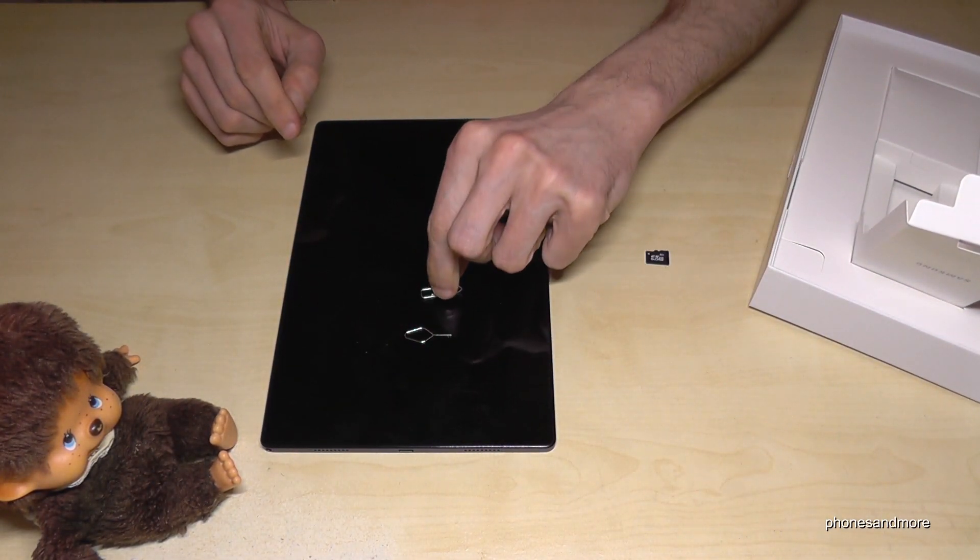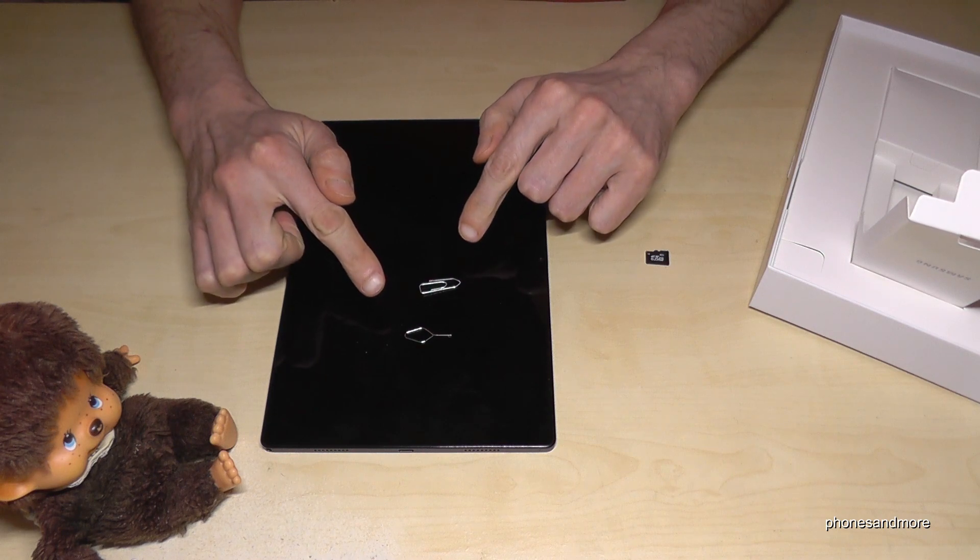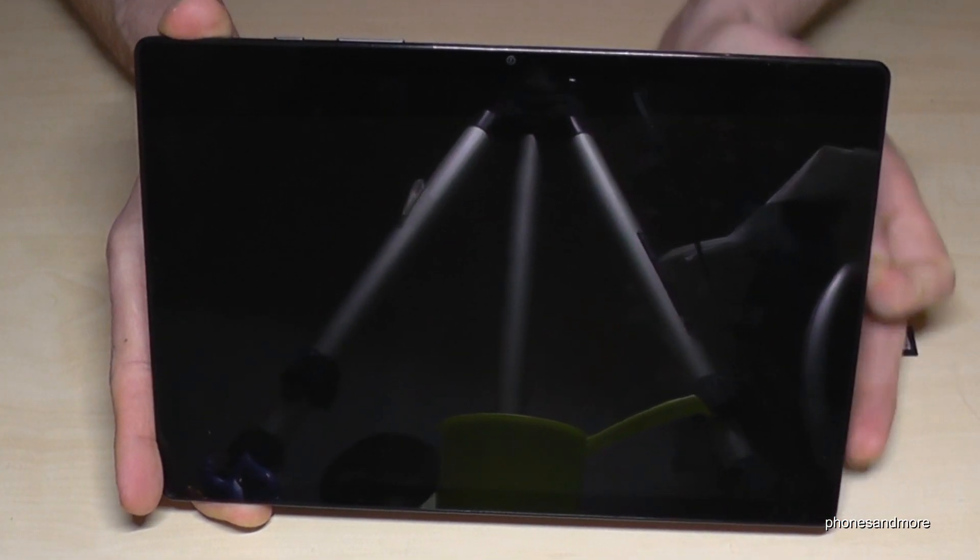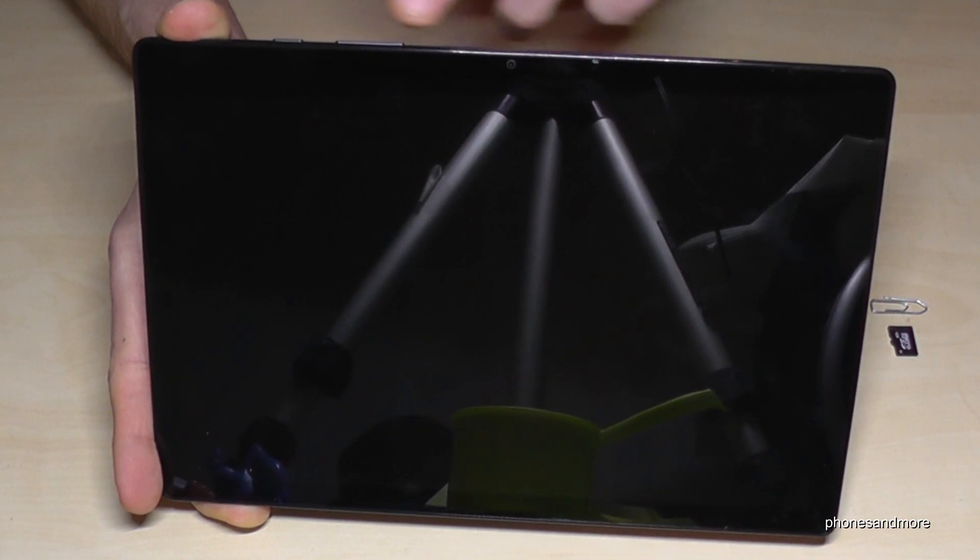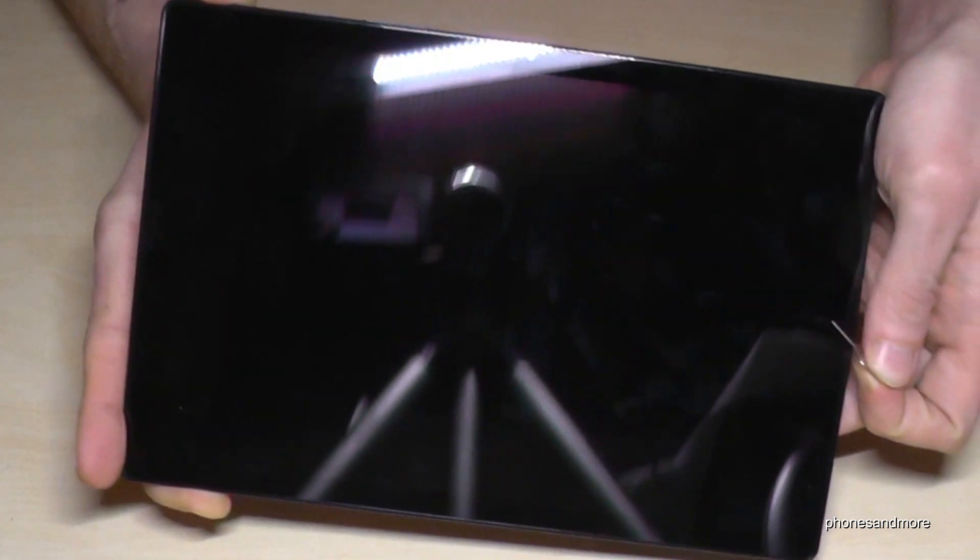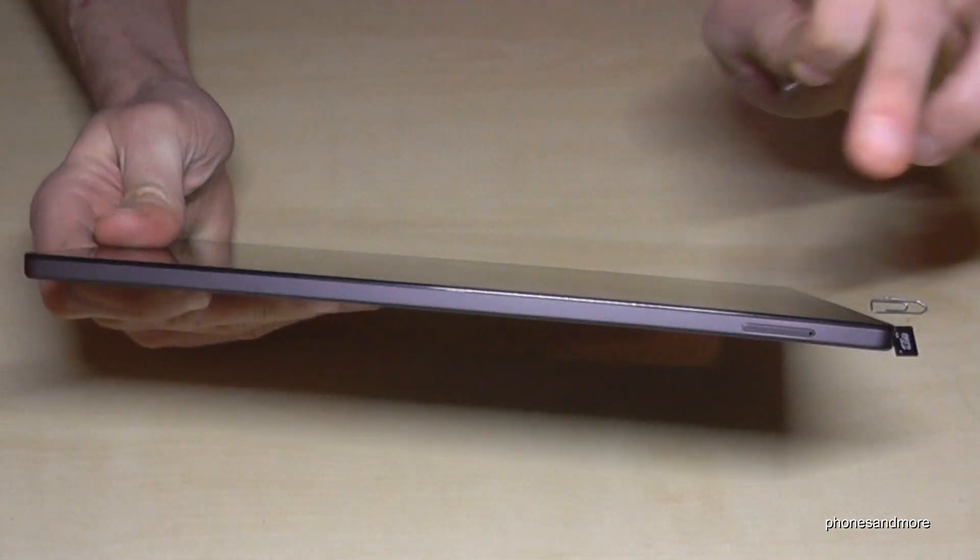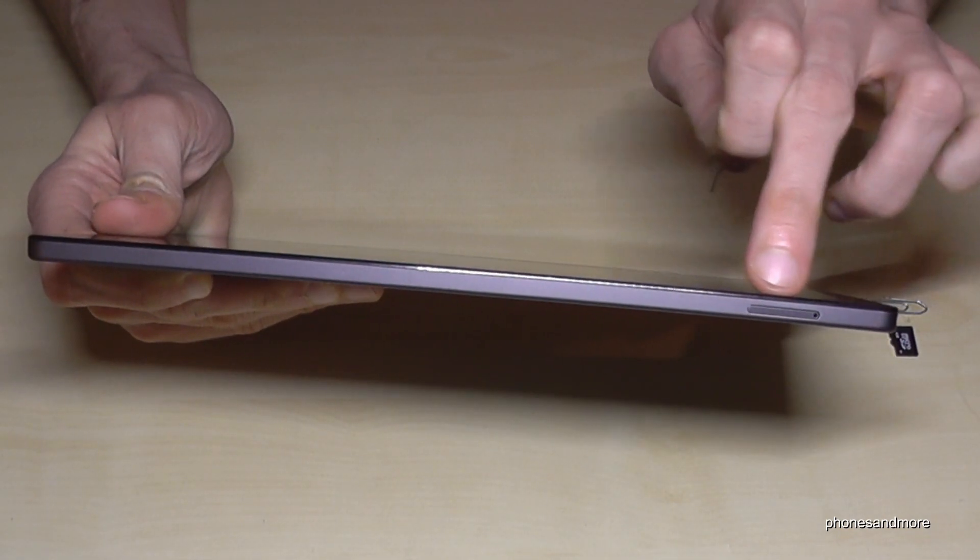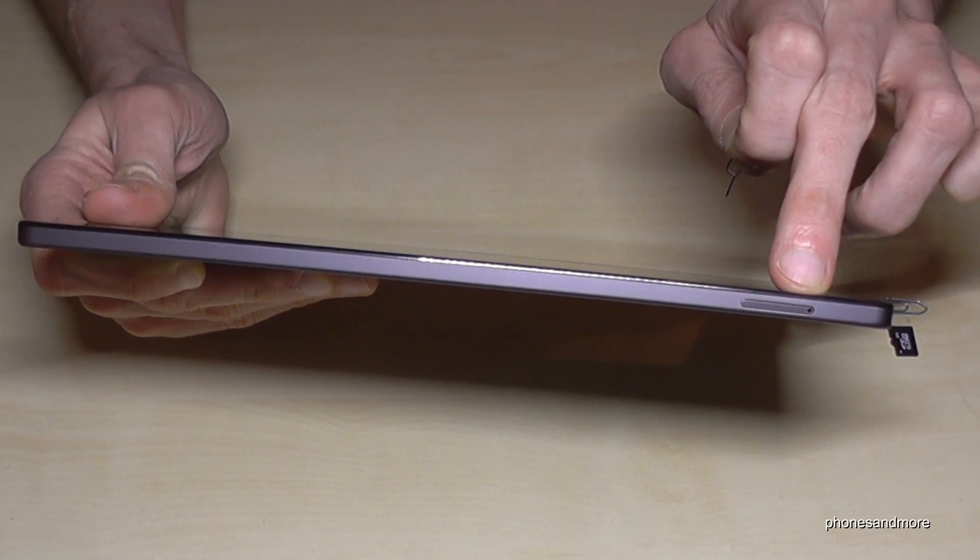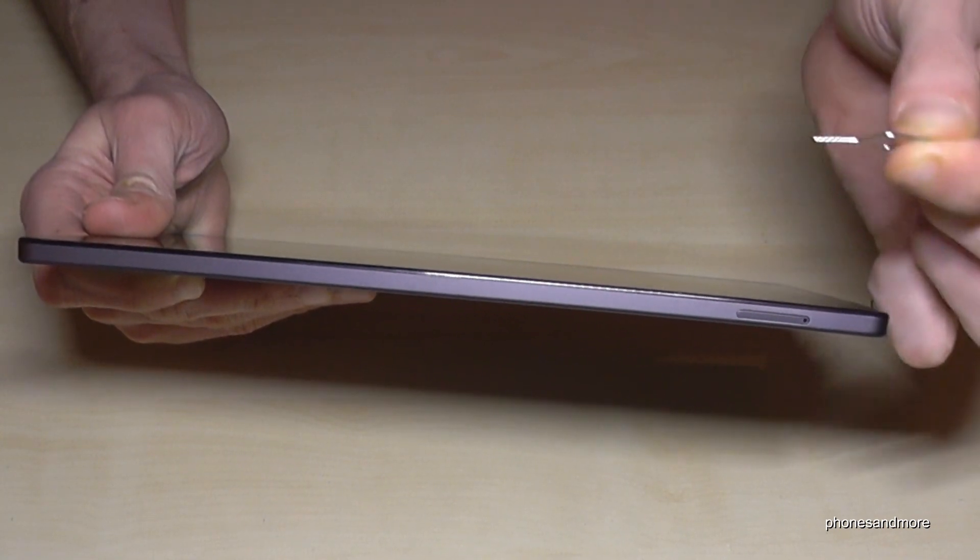If you're holding the tablet like this, here's the camera and the buttons. You will find the SIM tray down on the other side of the tablet. The part of the SIM tray has a small hole in there.